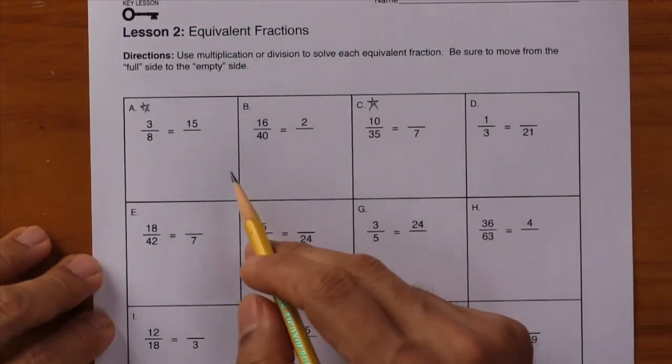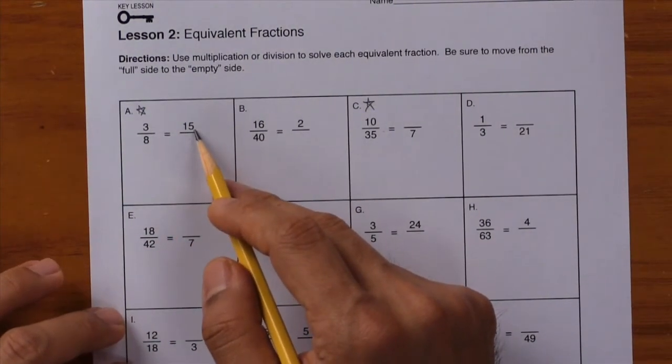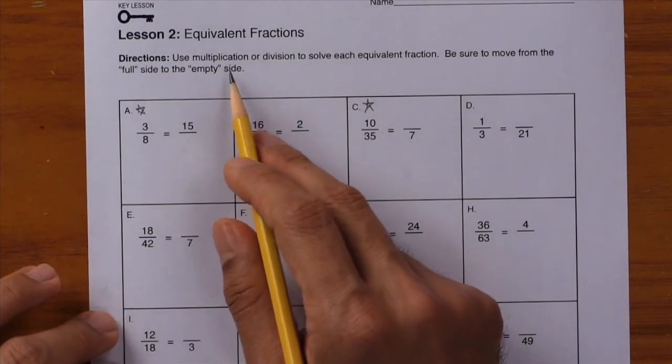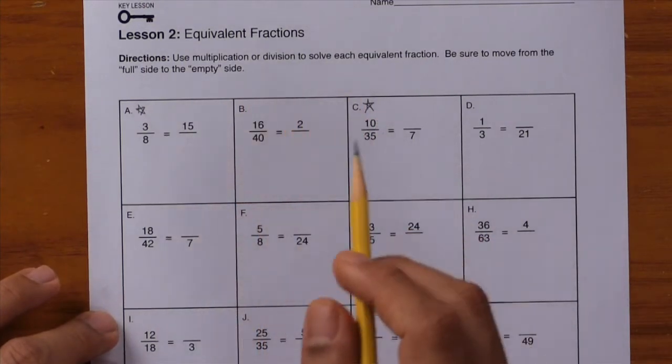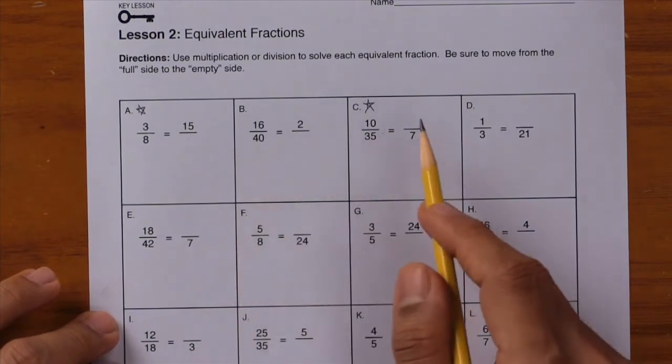Lesson 2: Equivalent Fractions. Working with proportions simply involves working with equivalent fractions, so let's make sure that we're comfortable with them. In the set of exercises, students are given three values in a proportion and they need to figure out the fourth value using multiplication or division. Sometimes the missing value is on the bottom, sometimes the missing value is on the top.